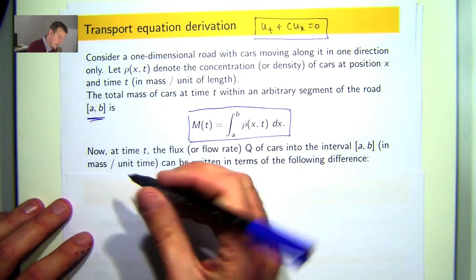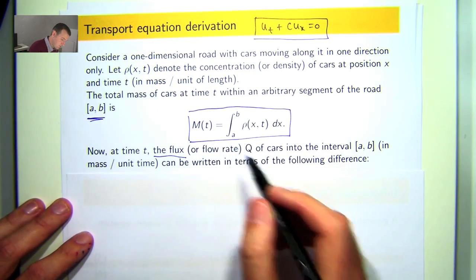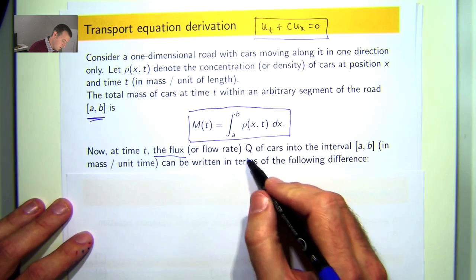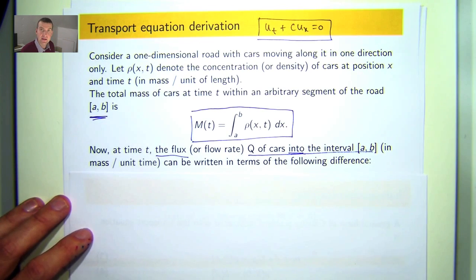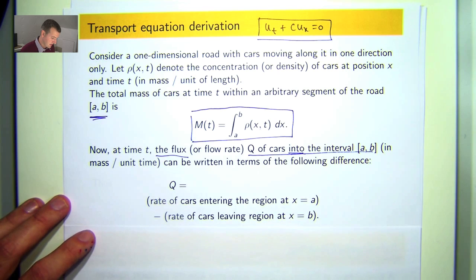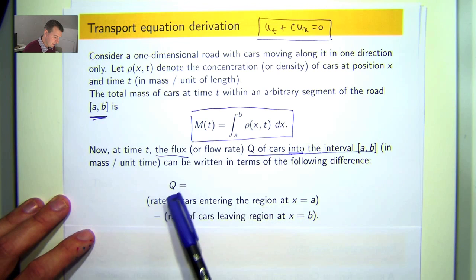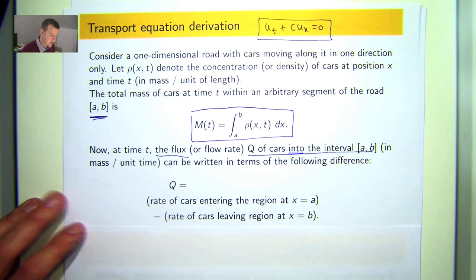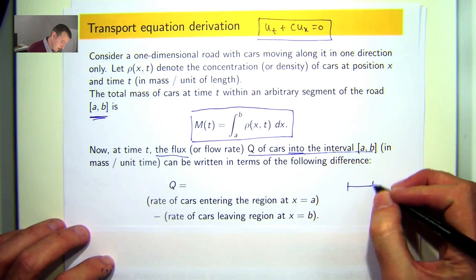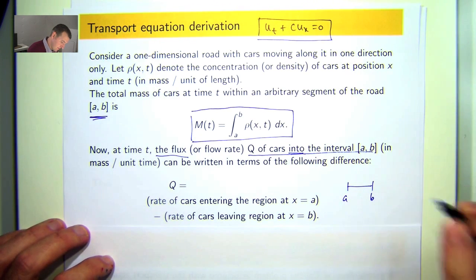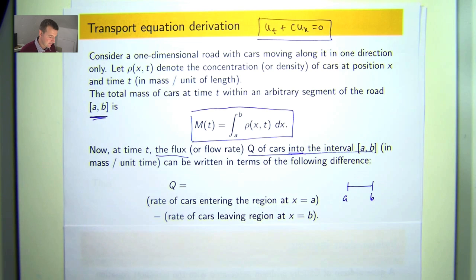Now, at time t, the flux or the flow rate of q of cars into this interval can be written in the following difference. Big Q is just the rate of cars entering the region at x equals a minus the rate of cars leaving the region at x equals b.